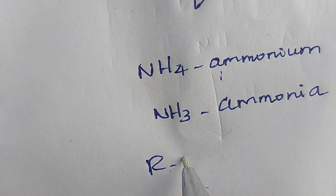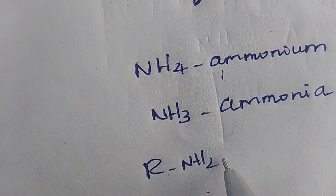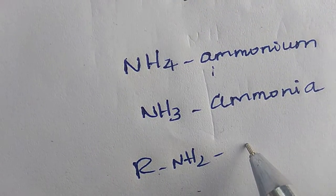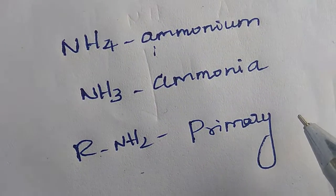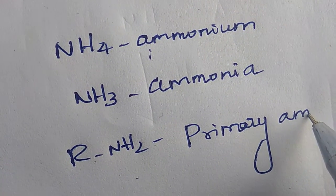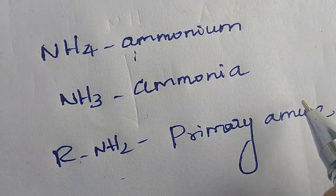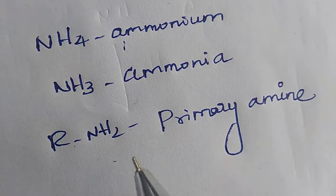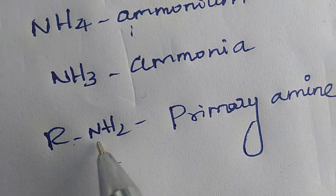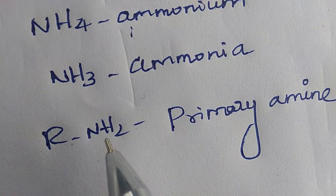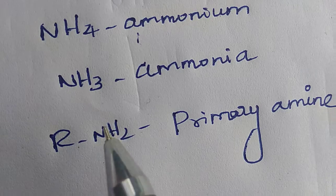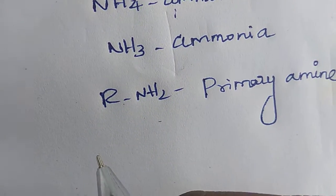This is R-NH2, primary amine. Why is it known as primary amine? Because nitrogen is adjacent with two hydrogen atoms, so it is known as primary amine.